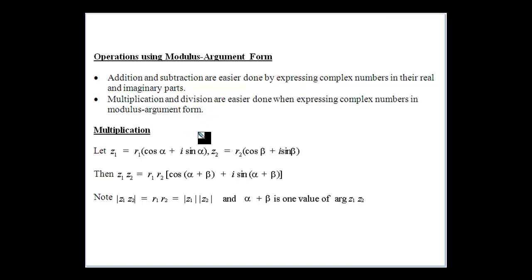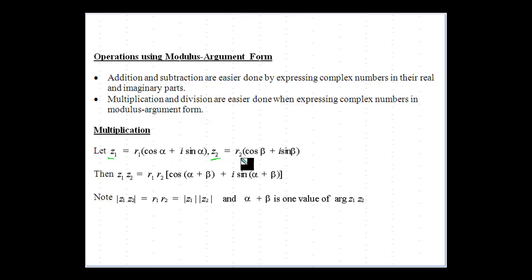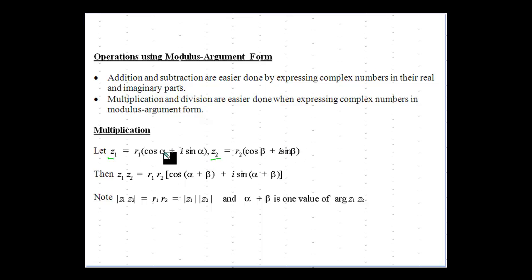When we multiply two complex numbers z1 and z2, z1 has modulus r1 and argument alpha, z2 has modulus r2 and argument beta. Multiplying across, we multiply r1 times r2, then expand the cosine and sine terms — cos(alpha)cos(beta), cos(alpha)i·sin(beta), and so on — which gives us forms of cos(alpha + beta) and sin(alpha + beta). You can find the full proof in the textbook.